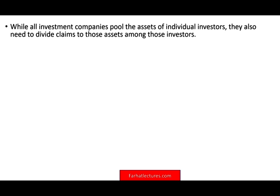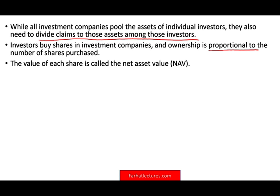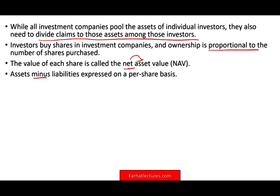Because all this money is pooled together, you also need a way to divide the claim to those assets among investors. Investors buy shares in investment companies, and ownership is proportional to the number of shares purchased. The value of each share is called NAV, or net asset value. Every time you hear the word 'net,' something is subtracted — in this case, assets minus liabilities, expressed on a per-share basis. The formula is: market value of assets minus liabilities, divided by shares outstanding.